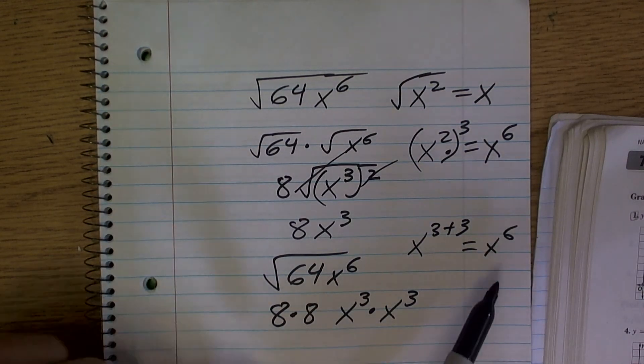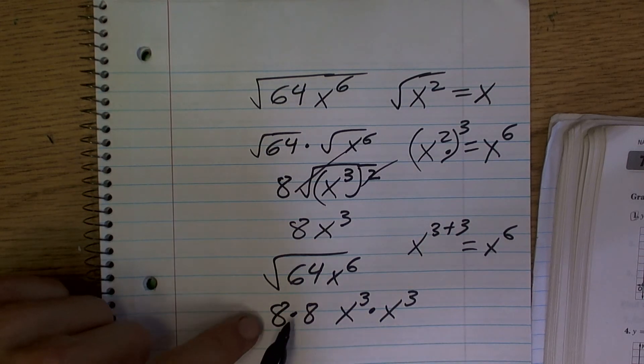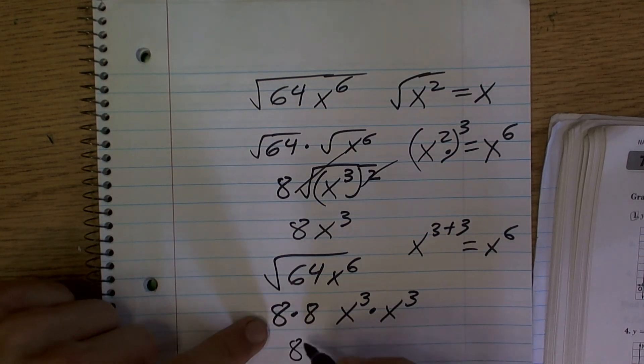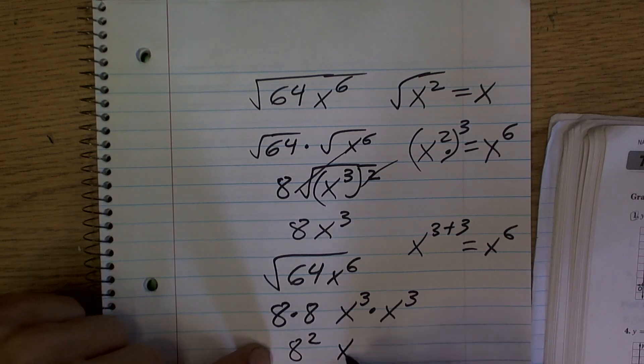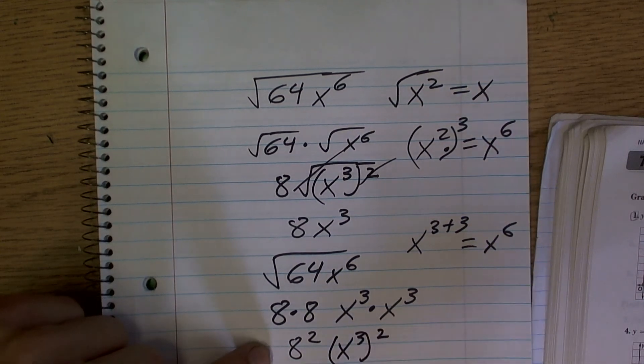Okay. So, all I'm pretty much saying is, we know that this equals 8 squared, which is still 64, and this would equal x cubed squared.